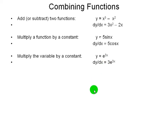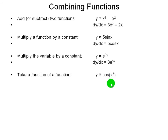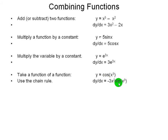The next case is more complicated: we're taking a function of a function. Here we have cosine not of x, but cosine of x cubed. The way we deal with that is you first take the derivative of the inside function — which is 3x squared — and then take the derivative of the outer function with the inner function remaining inside. The derivative of x cubed is 3x squared; the derivative of cosine is minus sine, and the same function stays inside. This is called the chain rule.